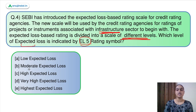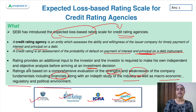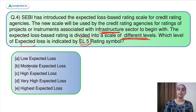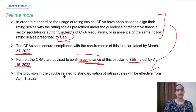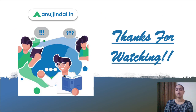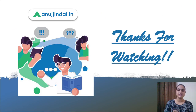The answer to the question about EL5 is option C — EL5 indicates high expected loss. This was all for today's session. I hope you found this session useful and understood the basic terms covered here. Thank you so much.